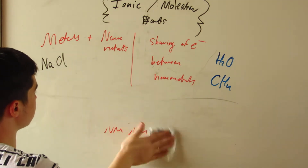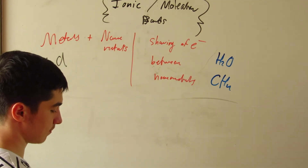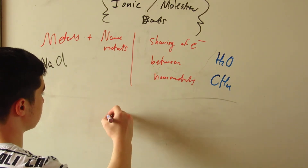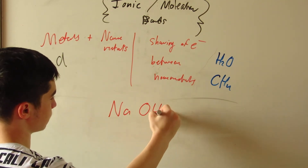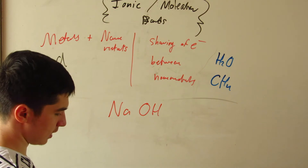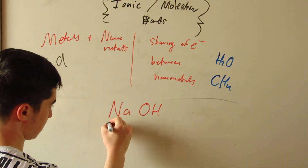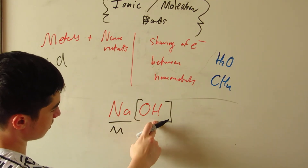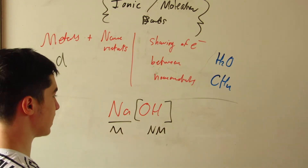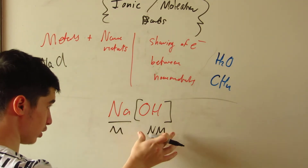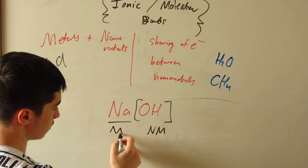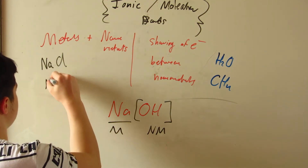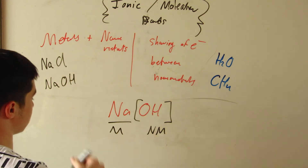Another example: NaOH. Let's break it down. Sodium is a metal. Hydroxide is two nonmetals together, making it a nonmetal polyatomic ion. So we have a nonmetal polyatomic ion bonding with a metal — that's ionic. NaOH is part of the ionic bond category.